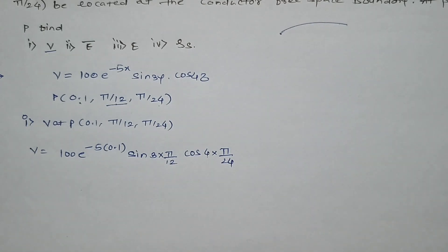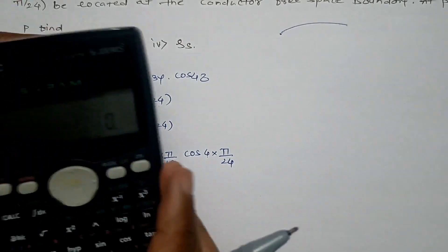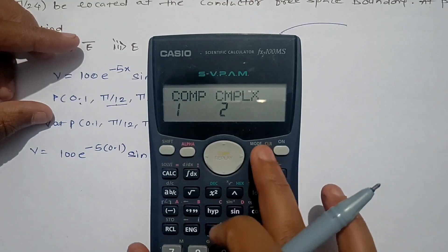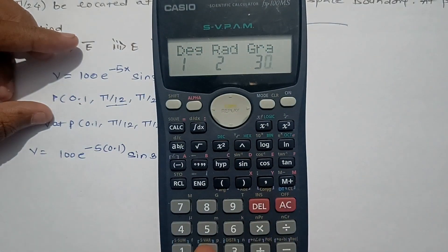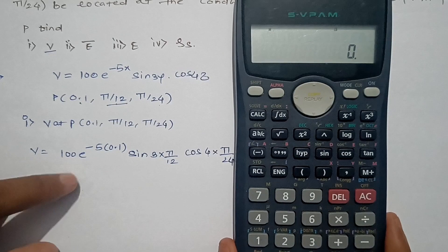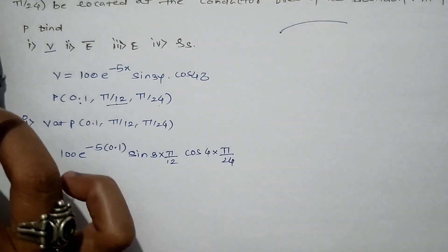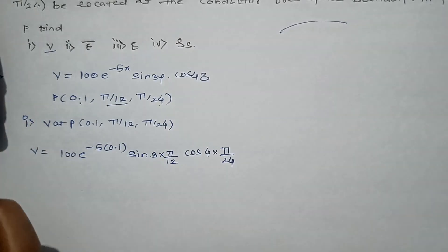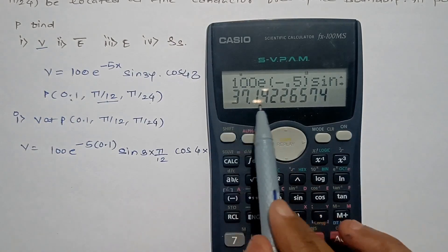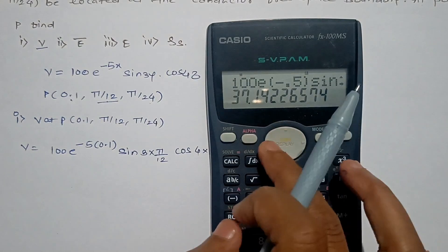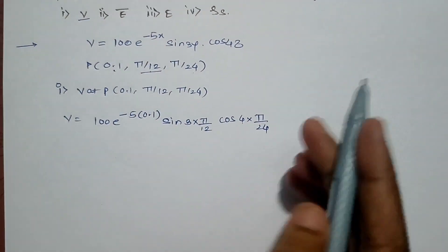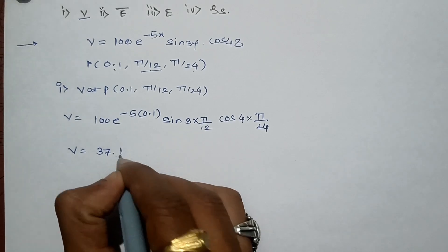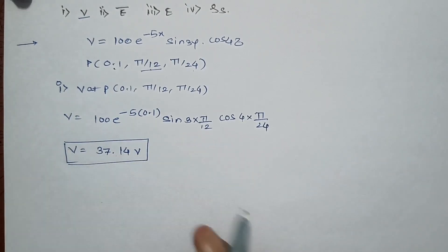To solve this, we will use Radian Mode in the calculator. Going to the mode options, we select Radian Mode. We then put in all those values: 100 into e^(-5×0.1) × sin(3π/12) × cos(4π/24). This value comes out to 37.14. So V at point P is equal to 37.14 volts. This is the answer to our first question.